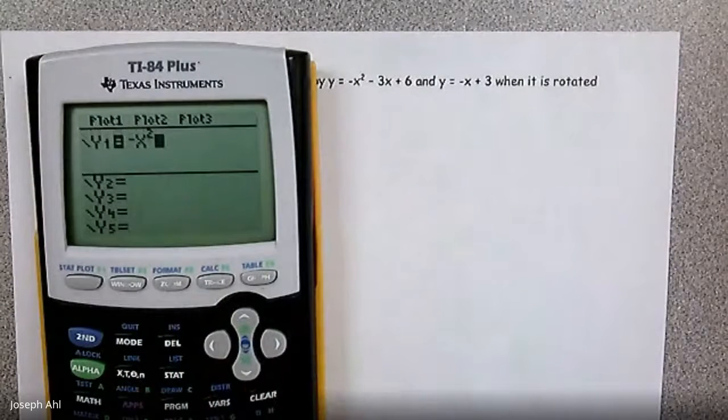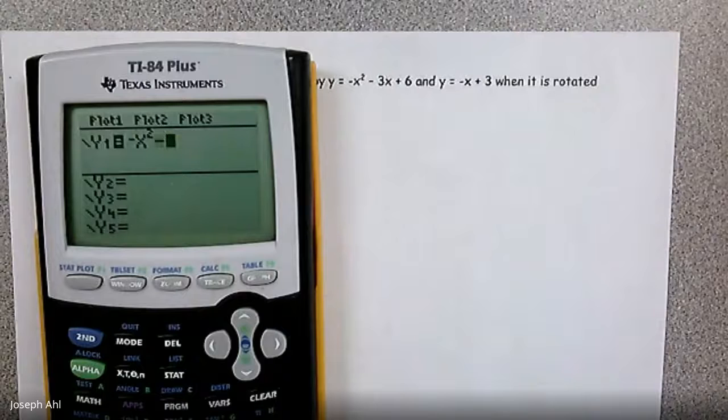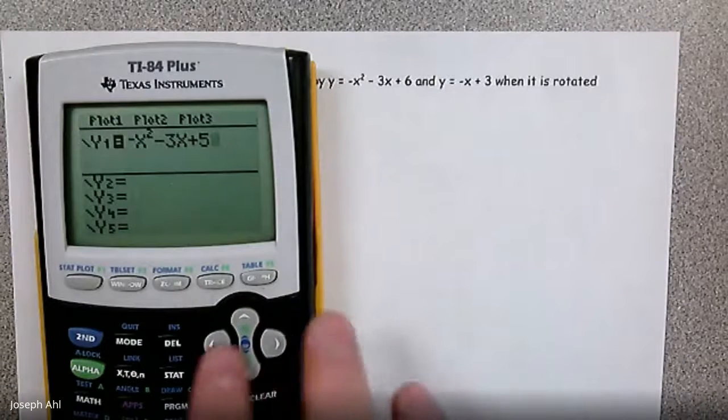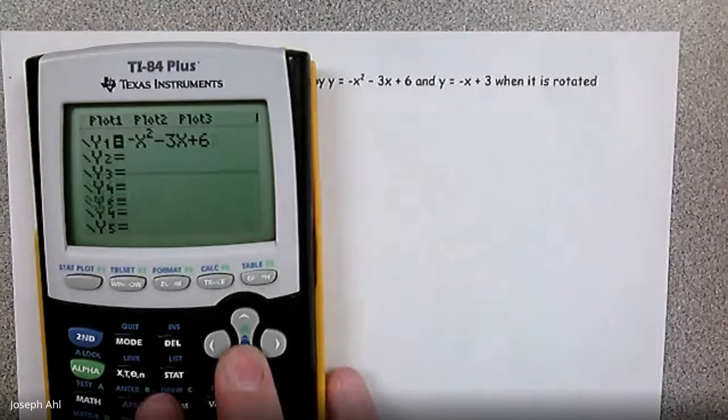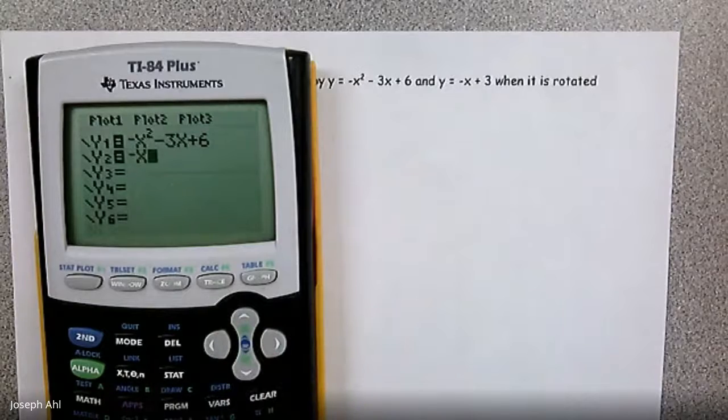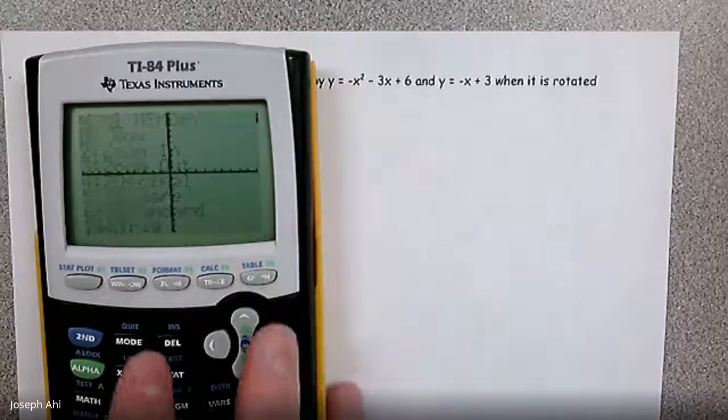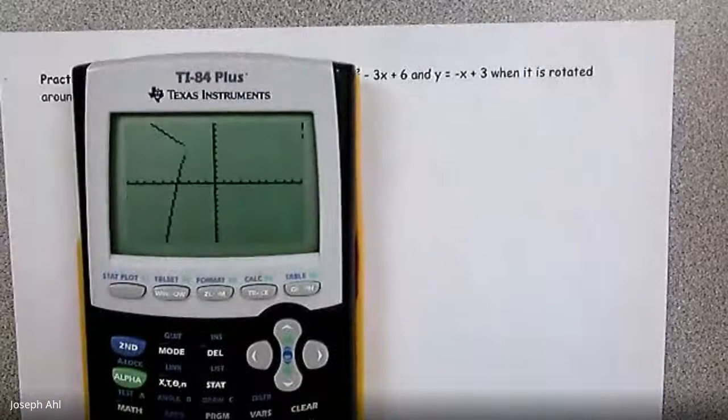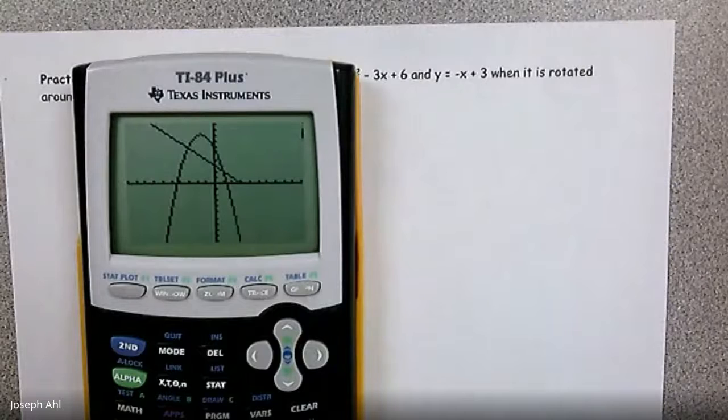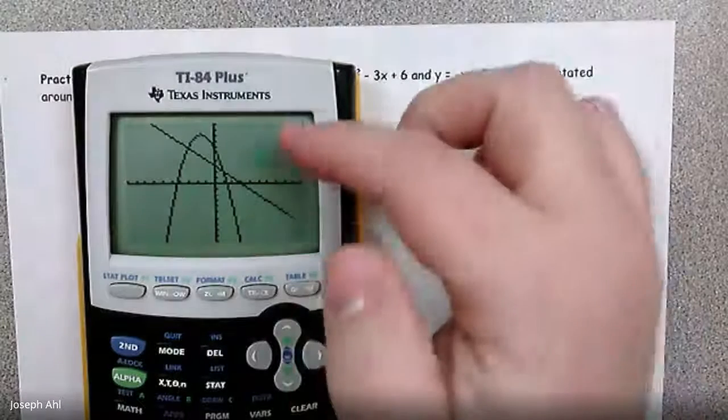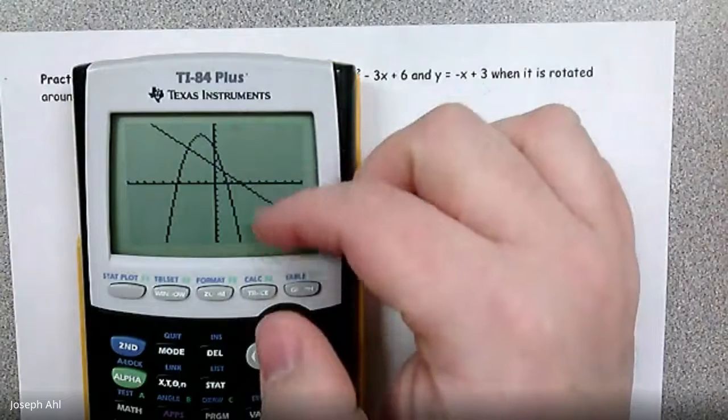So we get negative x squared, and then minus 3x plus 6, and negative x plus 3. So this is the region we're taking, and we're going to rotate it around the vertical line x equals 3,